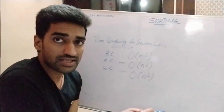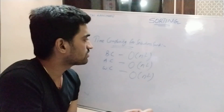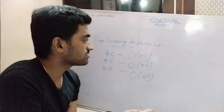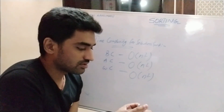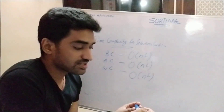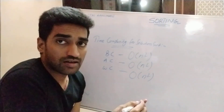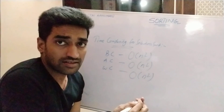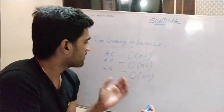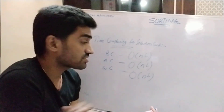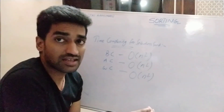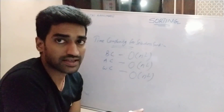In bubble sort, the best case time complexity is O(n). For average case and worst case, the time complexity is O(n²).